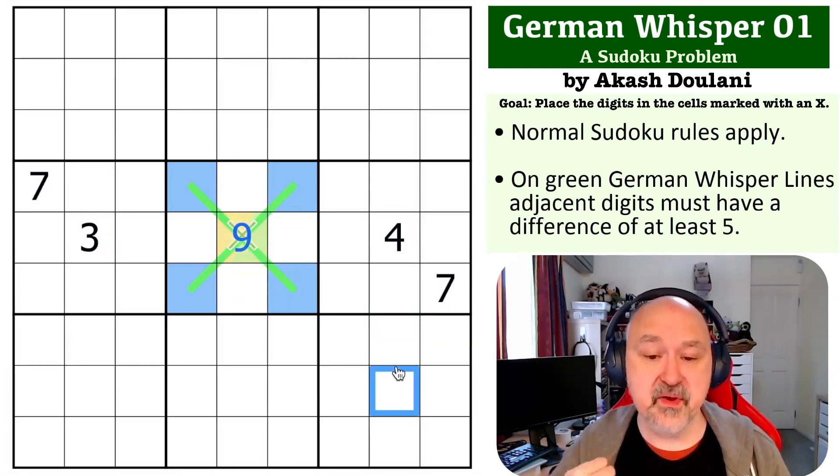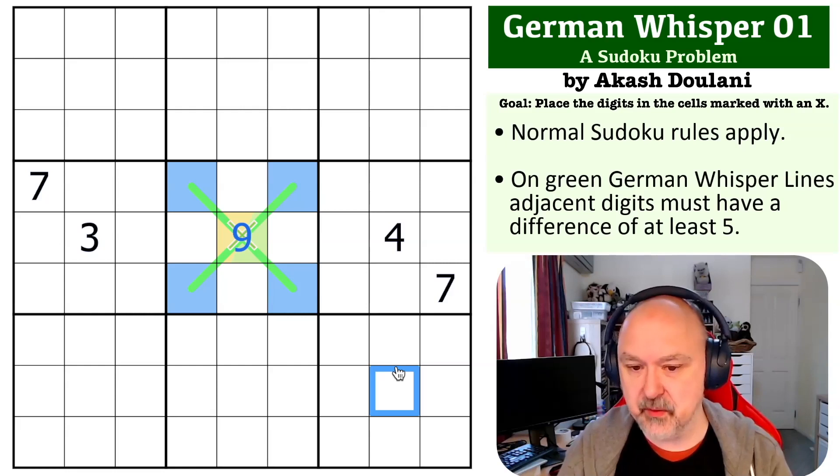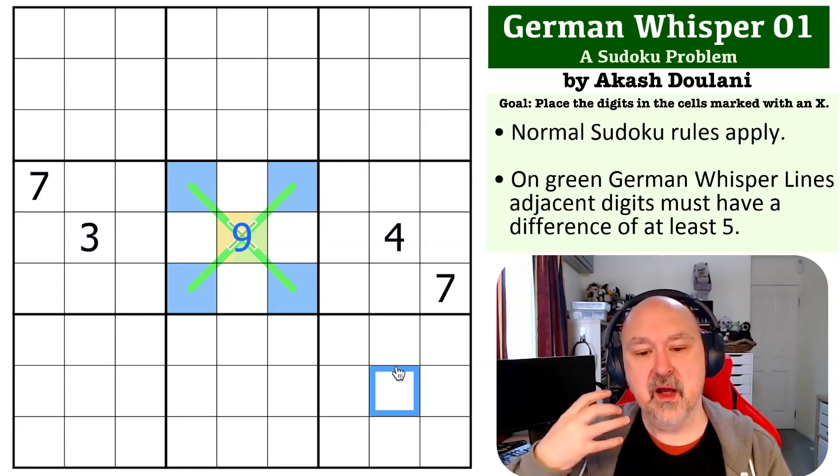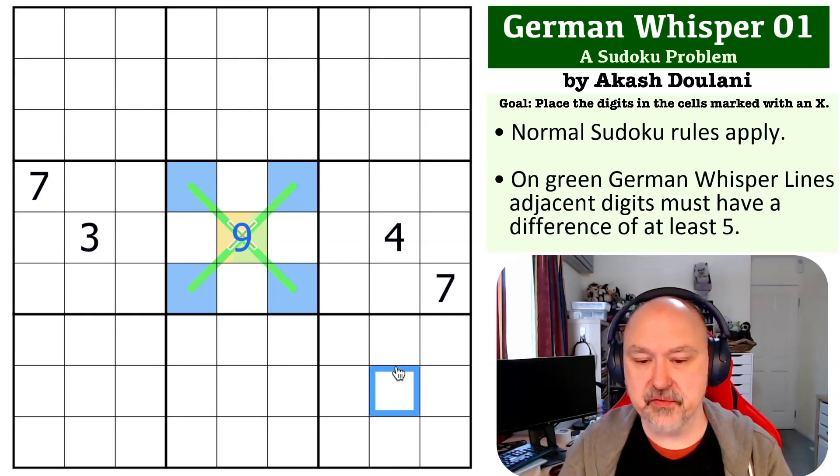Not a very hard one, but an important piece of German whisper logic. So hopefully that one is interesting to you. Thank you to Akash for sending that one through. If you'd never seen that before, it's kind of a nice trick when you get overlapping whisper lines, very constraining of the digit in the middle. So thank you, Akash, for sending that one through. Hopefully you're enjoying the series. And as always, good luck with your solving.